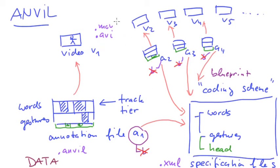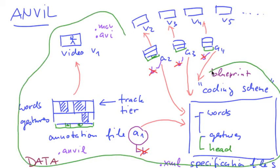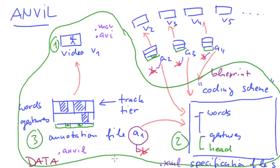Usually, first you have a video. And then the second step in Anvil is you have to have a specification. So you have to have a way to specify in what structure you want to annotate. And only then can you create your first annotation file.